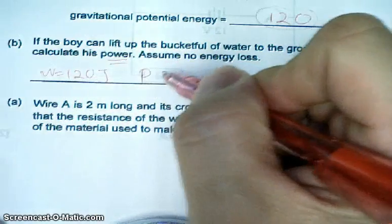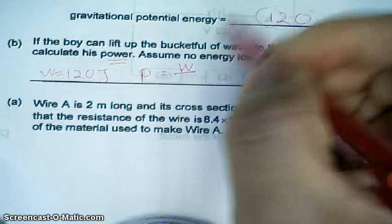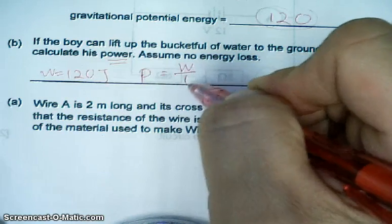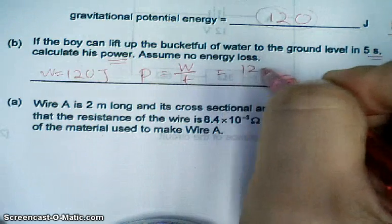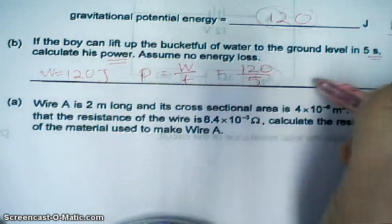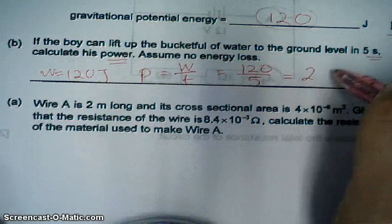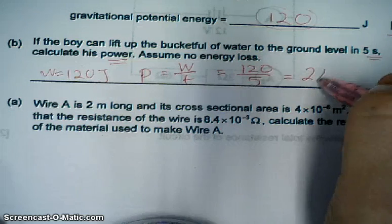Power. We got to recall P equal to W divided by T. So we get 120 divided by 5. Right. It's 24 watts.